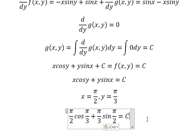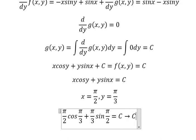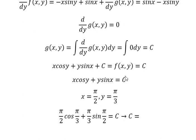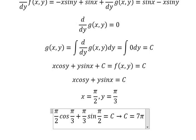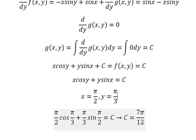So this one we simplify and we have C equals to π/2 times cos(π/3) plus π/3 times sin(π/2), which equals 7π/12. And now we put this one to replace C.